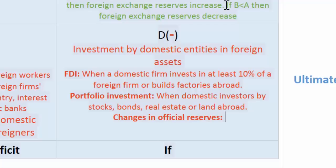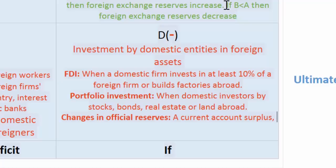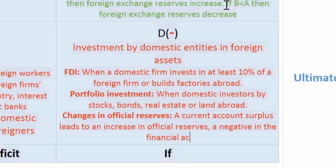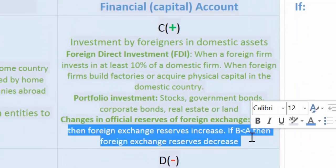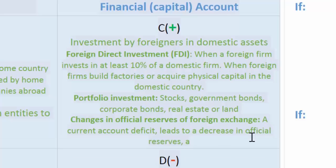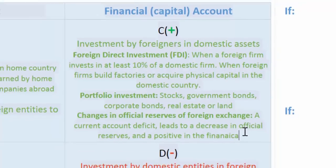Looking at changes in official reserves: if a nation runs a current account surplus, then the central bank's accumulation of foreign reserves will increase due to the fact that more money is entering the country from international trade than is leaving. So the official reserves increase, which is recorded as a negative in the financial account. Conversely, if there is a current account deficit, this leads to a decrease in official reserves and a positive in the financial account.